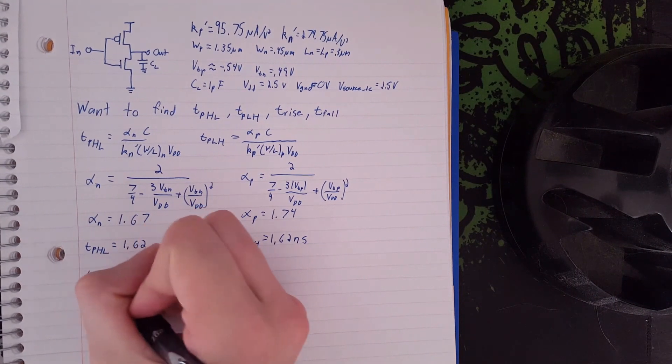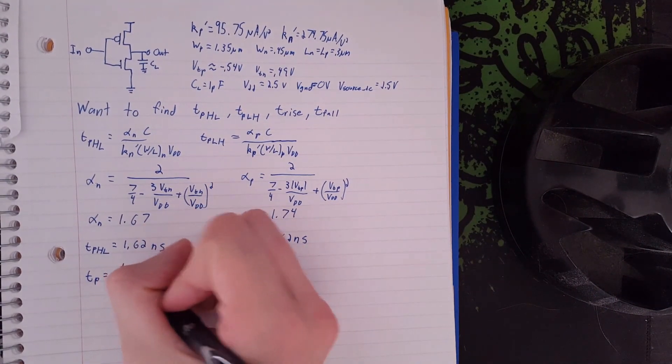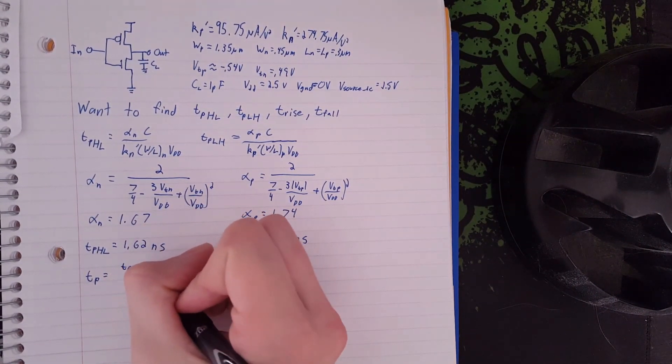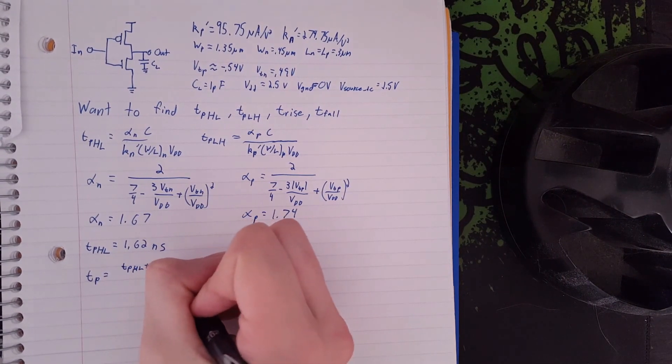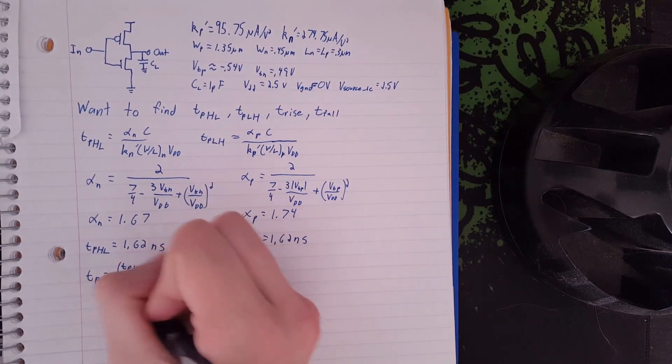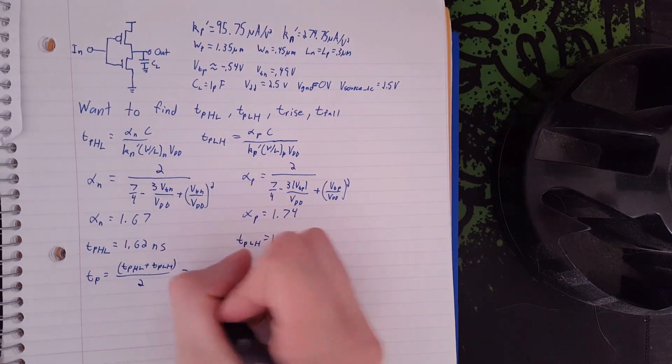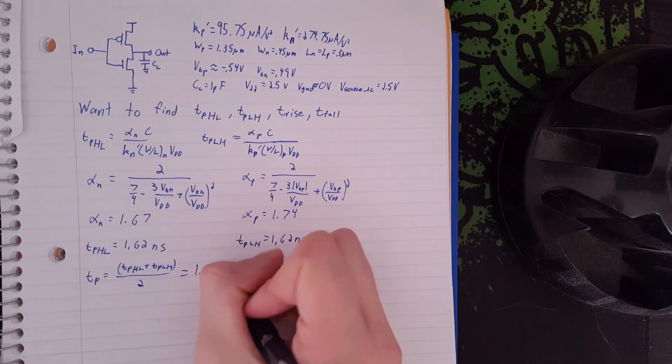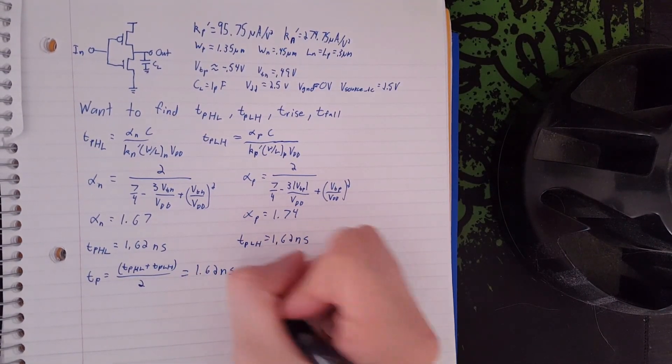To find TP, you just take the average of these two, TPHL and TPLH. Obviously, you just get 1.62 nanoseconds.